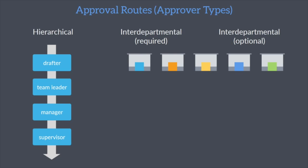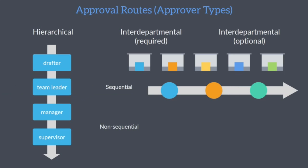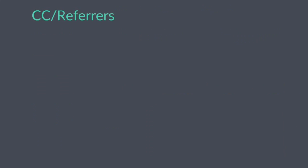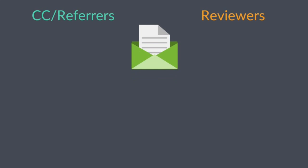For both interdepartmental options, drafters can choose sequential or non-sequential processing. Sequential processing goes through each user in the order you selected for the approval route. Non-sequential processing allows the user to approve or reject the document as soon as you submit the draft, regardless of order. You'll also notice that you can add CC or referrers as well as reviewers. There are a few key differences to help you decide whether to CC a user or assign them as a reviewer.